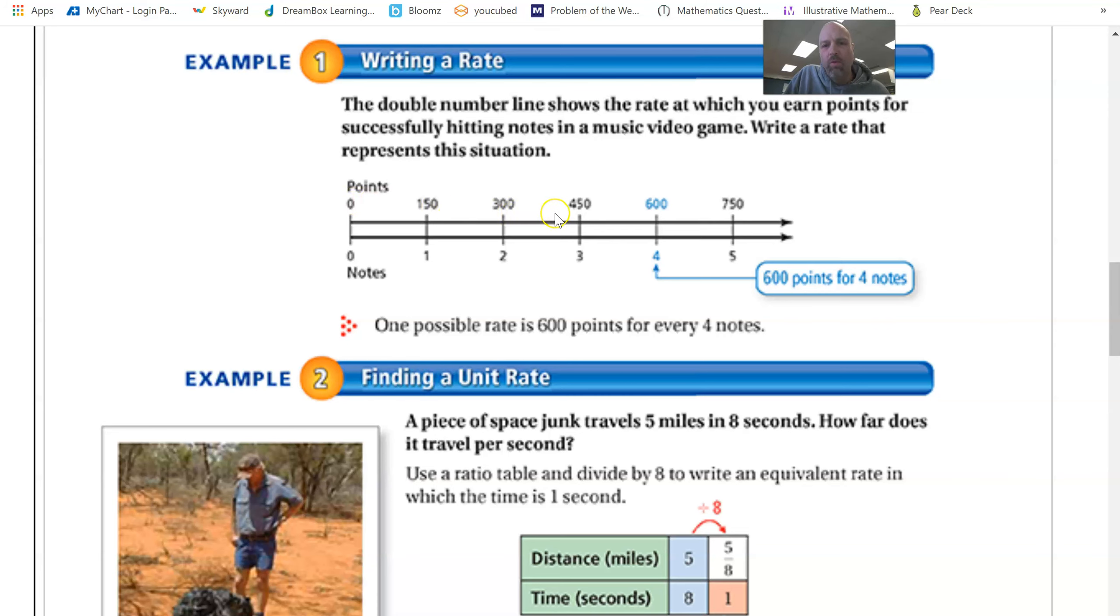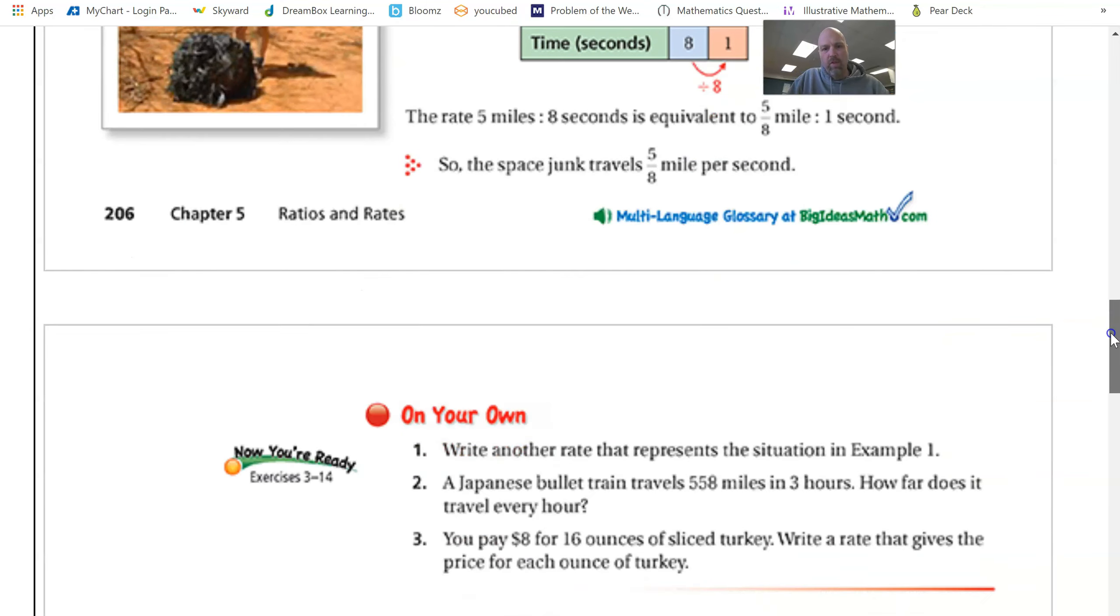Here, this is called the double number line, which I don't think we've used before, but it's a very close cousin of the data table that we have used extensively. So whatever we do to the top, we do to the bottom and vice versa. And those are both problem-solving tools.